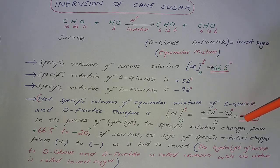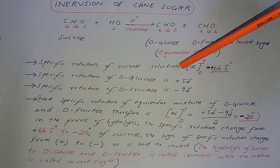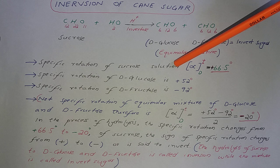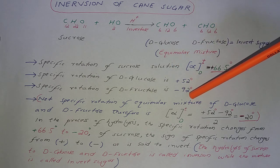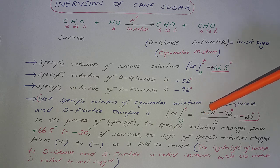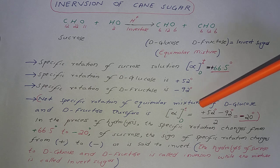So here is inversion of cane from positive to negative. Because sacrose solution rotates the plane polarized light to the right side, while hydrolyzed sacrose solution rotates the plane polarized light to the left side. So there is change in direction of plane polarized light.